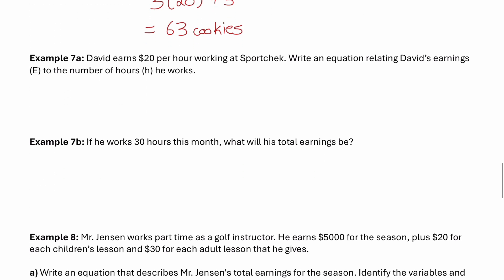Example 7: David earns $20 per hour working at SportCheck. Write an equation relating David's earnings E to the number of hours H he works. His earnings equal 20 times H, so E equals 20H. If he works 30 hours this month, we replace H with 30: 20 times 30 equals $600.